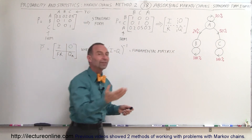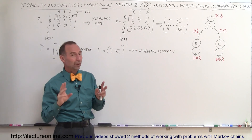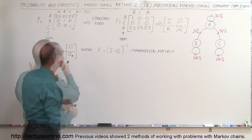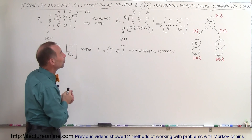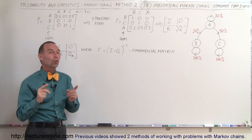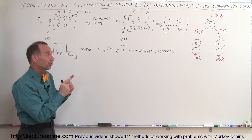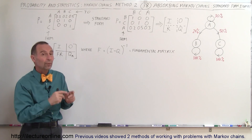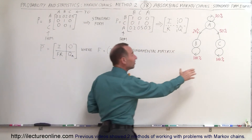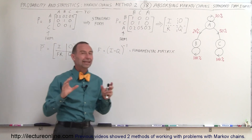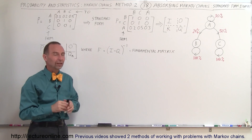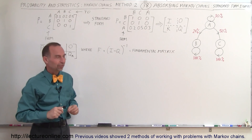The proportion of the population in each absorbing state will depend on two things: what we call the stable transition matrix, and also what the initial state matrix is. When we have more than one absorbing state, the end result depends on the initial state as well, and we'll see some examples of that.